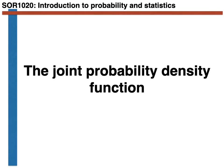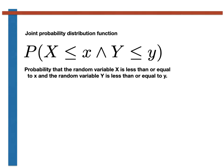In that previous video, I started by noting that we can introduce a joint cumulative probability distribution function that tells us the probability that the random variable X is less than or equal to x and the random variable Y is less than or equal to y. This was analogous to the way that we introduced the cumulative probability distribution function for a single random variable. In previous weeks, you have seen how the probability density function is equal to the derivative of the cumulative probability distribution function.